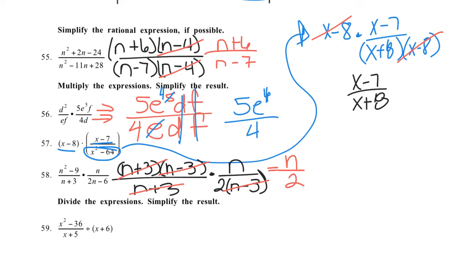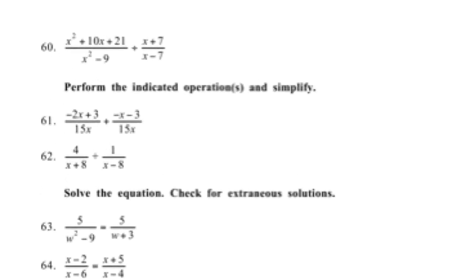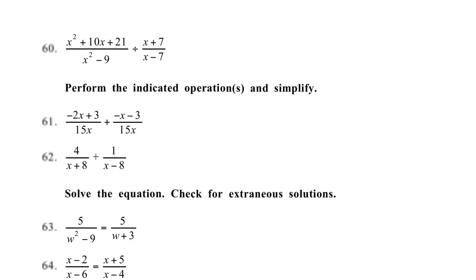To do division, again I'm going to factor: x plus 6, x minus 6 over x plus 5. Divide, I change it to multiply the reciprocal 1 over x plus 6. Now I can divide out any common factors. I see an x plus 6, and so what's left is x minus 6 over x plus 5.